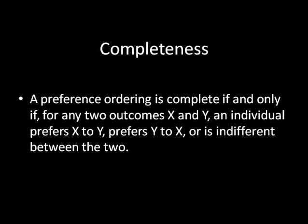Let's define completeness. We say that a preference ordering is complete if and only if for any two outcomes x and y, an individual prefers x to y, prefers y to x, or is indifferent between the two.